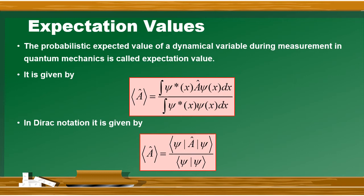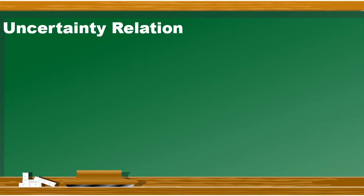Different cases में expectation values find करेंगे — उसके लिए अगले lectures में detail से बात करेंगे۔ Next topic is uncertainty relation. जैसे Quantum Mechanics के अंदर expectation values find करते हैں aur measurement کرتے ہیں، تو جب بھی physics میں measurements کی بات ہوگی تو uncertainty پے بات کریں گے۔ Uncertainty کا simple meaning ہے measurement کے دوران جو possible error ہوتا ہے، اسکو uncertainty کا نام دیا جاتا ہے۔